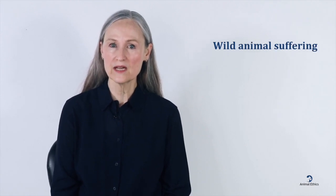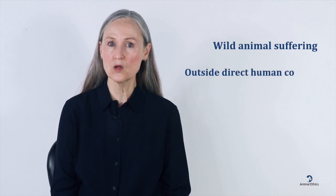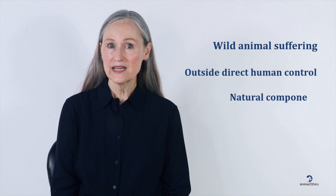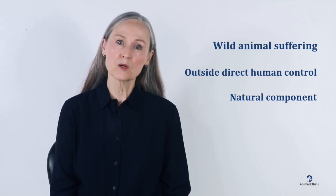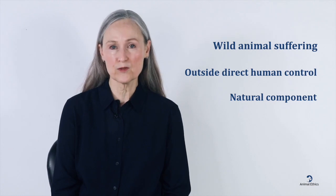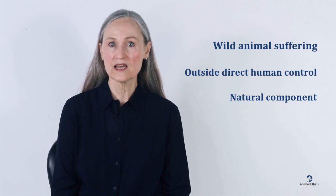As a result, the term wild animal suffering has also been used in a more specific way to name all those harms suffered by animals outside human direct control that have some sort of natural component. In this more specific meaning, the term wild animal suffering would also include harms resulting from indirectly anthropogenic effects that are more diffuse. An example is when animals die for natural reasons in a new ecosystem created by humans, such as a planted forest.